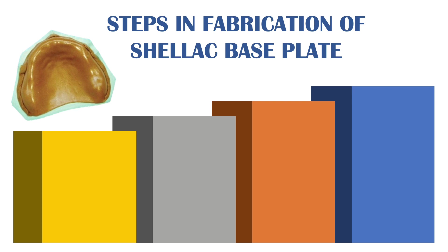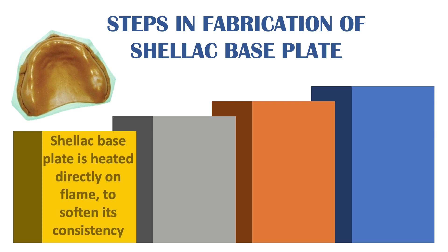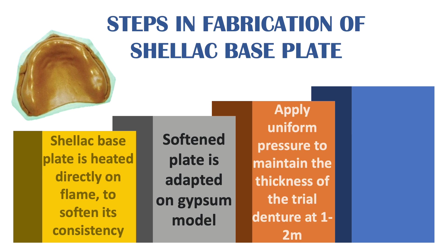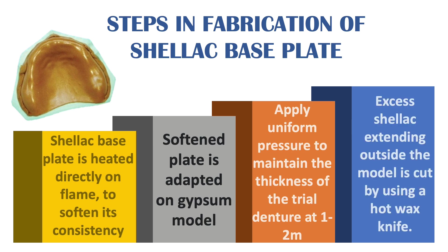In fabrication of the shellac base plate, the base plate is heated directly on the flame so that it softens. The softened plate is adapted on the gypsum model, and uniform pressure is applied to maintain the thickness at one to two mm. The excess extending outside the model is cut using a hot wax knife. Once it hardens it becomes brittle, so all procedures must be done quickly.